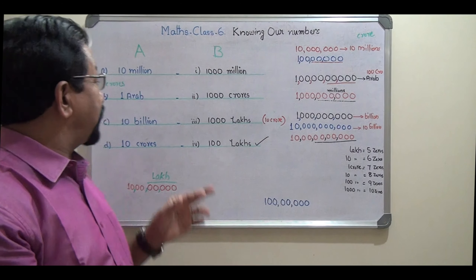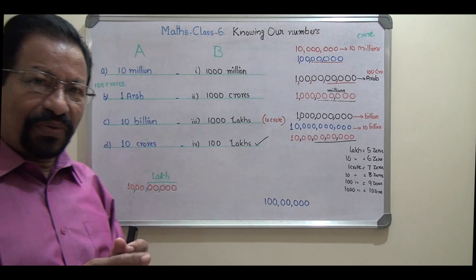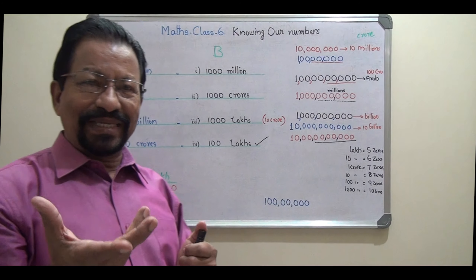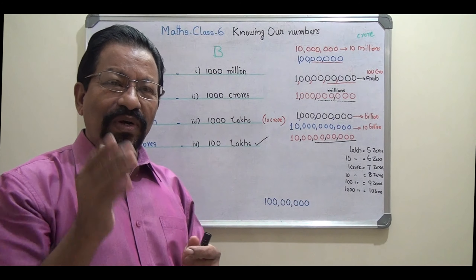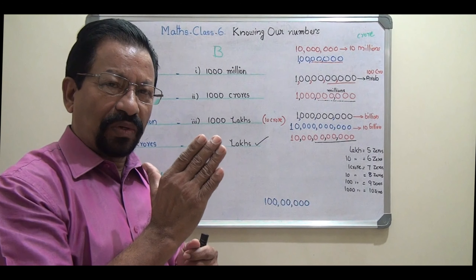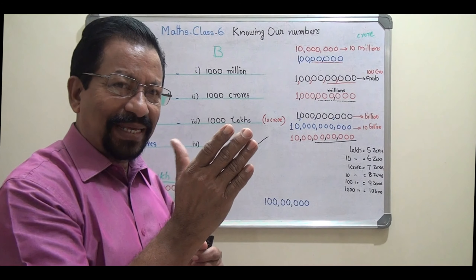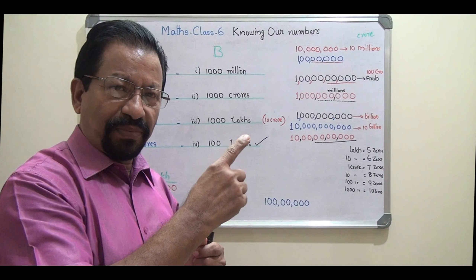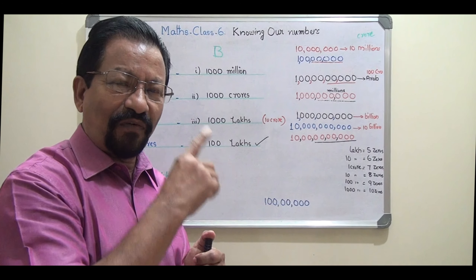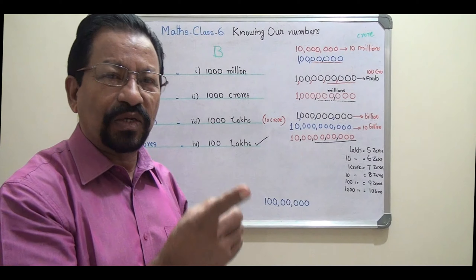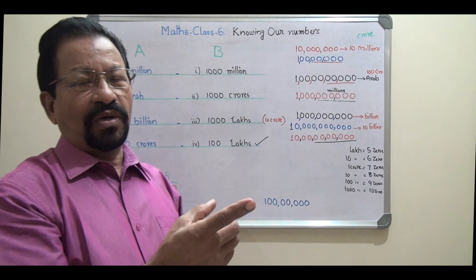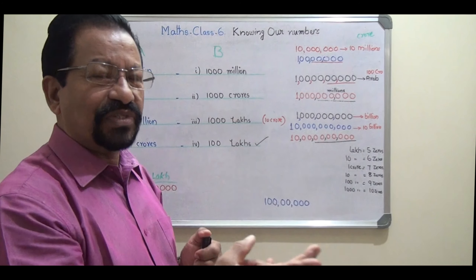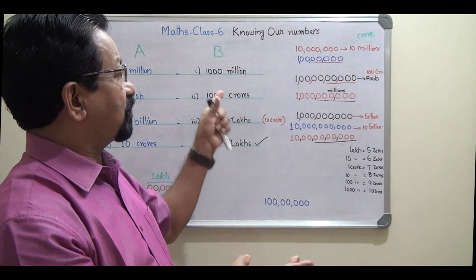Now comes the second question: 1 Arab. Nowadays we are not using Arabs commonly, but exams can ask about Arabs too. After 10 crores comes Arab: lakh, 10 lakh, crore, 10 crores, then Arab. So instead of 1 Arab, you can say 100 crores. Or 10 Arab is 1000 crores.